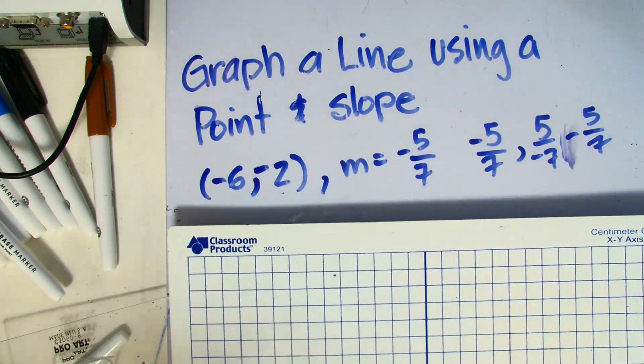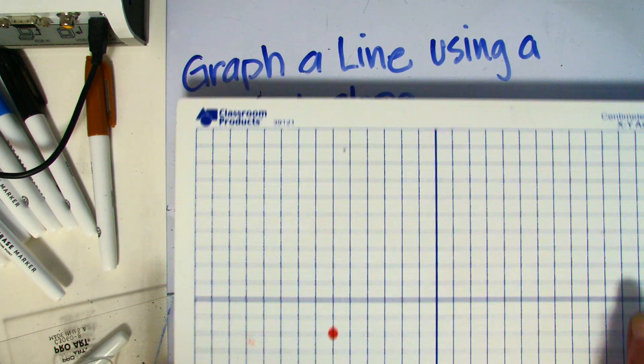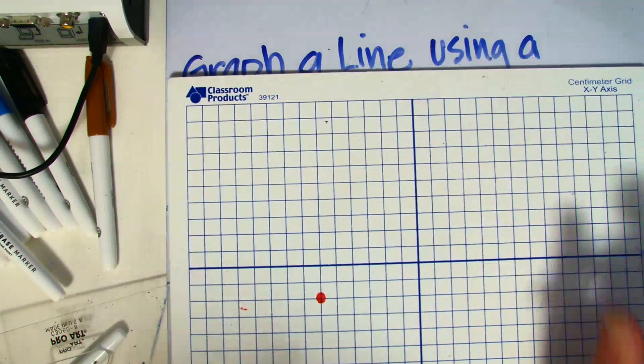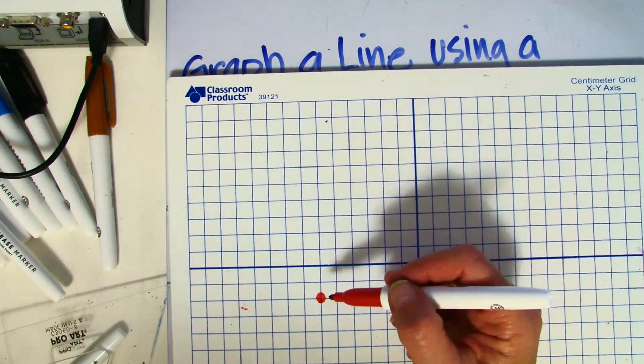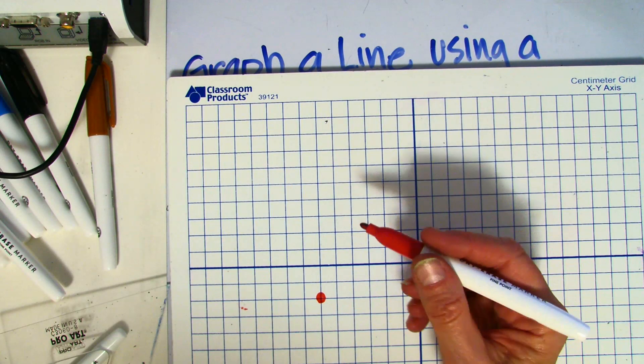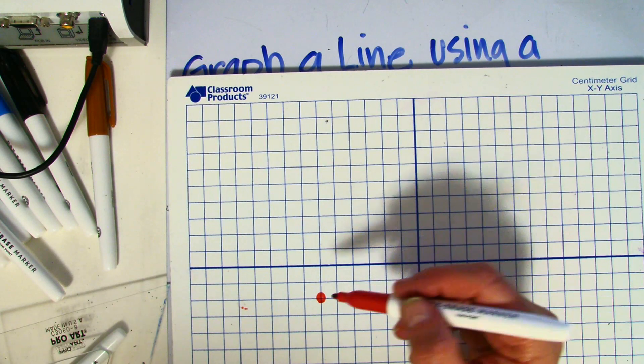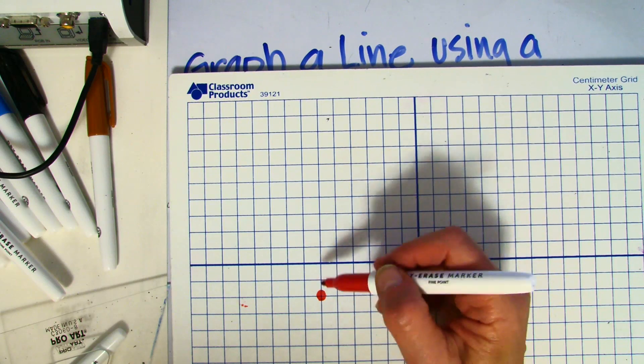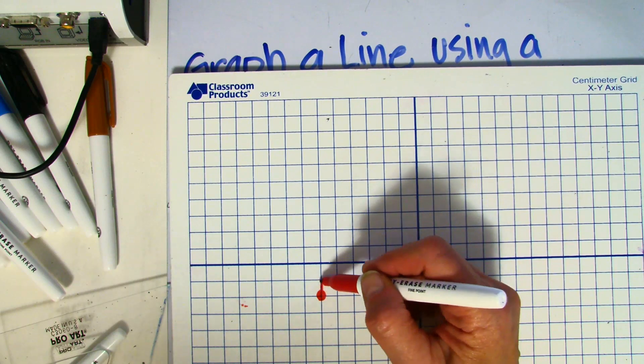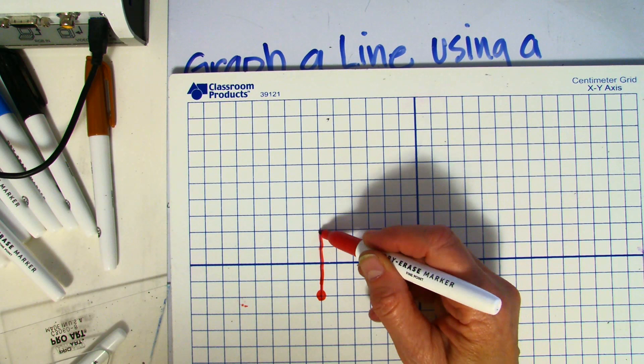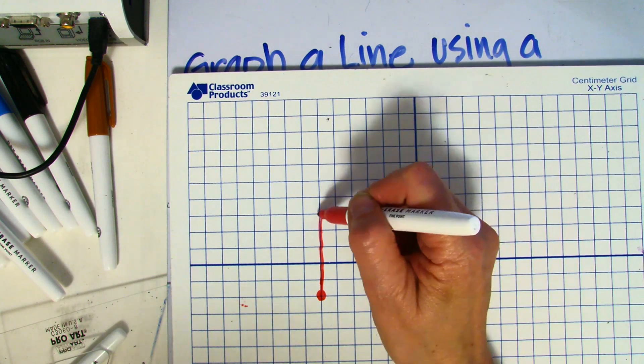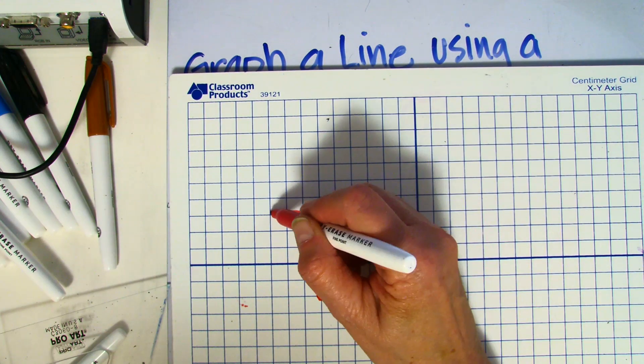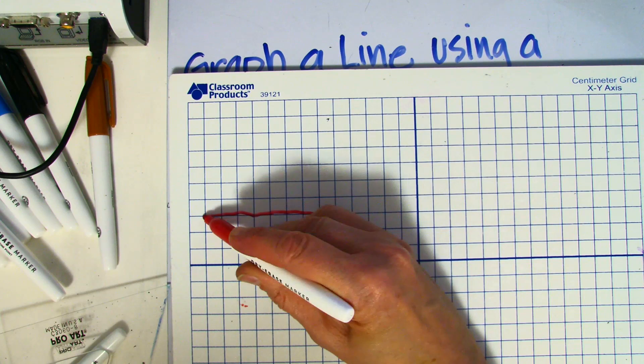Now, our slope is negative 5/7. So that means one of our either rise or run is going to be negative. I'm going to go ahead and go up 5, and then to the left 7. So if I go up 5, I'm going to go 1, 2, 3, 4, 5, and then to the left 7 is 1, 2, 3, 4, 5, 6, 7.